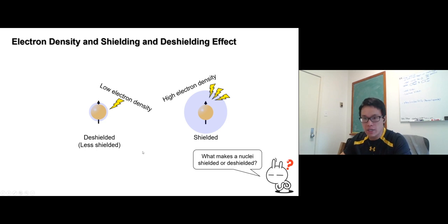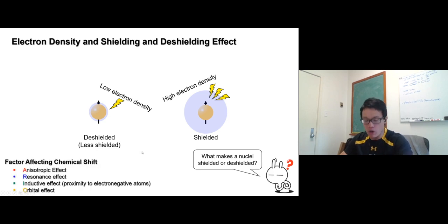Now, what makes a nuclei shielded or deshielded? Well, these are the following factors in ORIO - anisotropic effect, resonance effect, inductive effect, and orbital effect. We're going to start with something you're familiar already, the inductive effect.